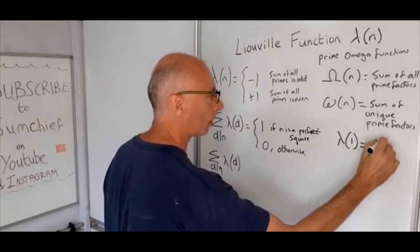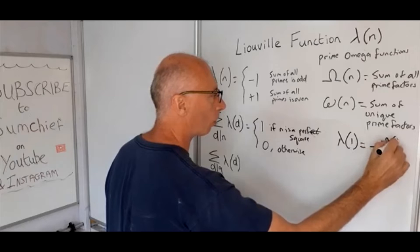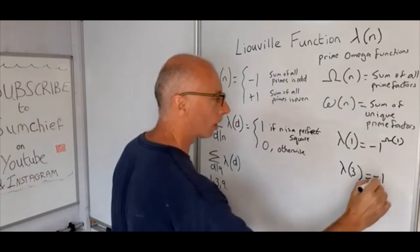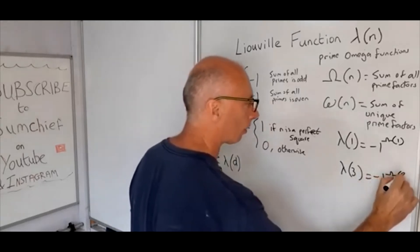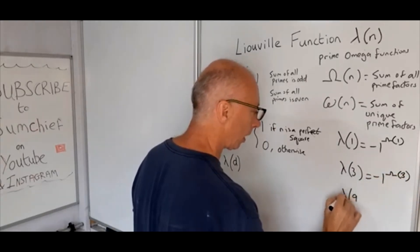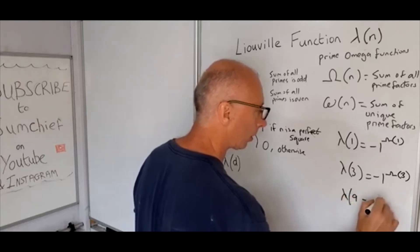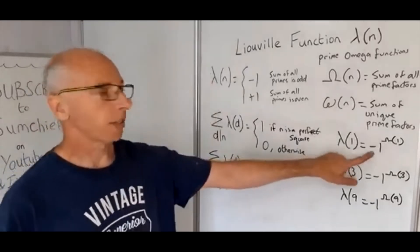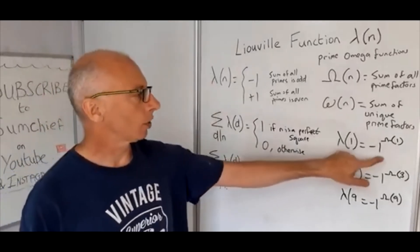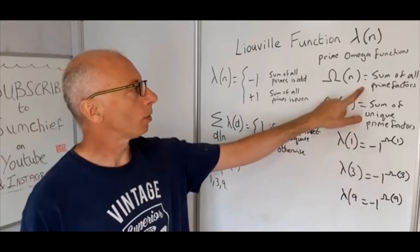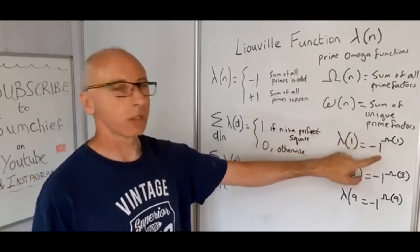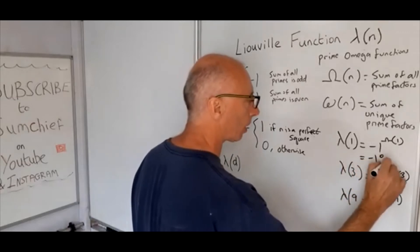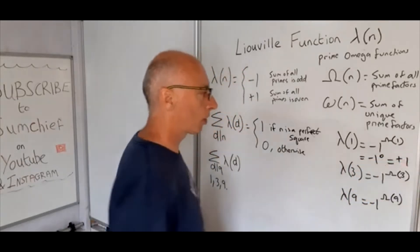We have λ(1) = (-1) to the power of Ω(1), λ(3) = (-1) to the power of Ω(3), and λ(9) = (-1) to the power of Ω(9). Starting with the Liouville function for 1: Ω counts the sum of all prime factors. There are no prime factors of 1, so it's (-1) to the power of 0, which equals positive 1.